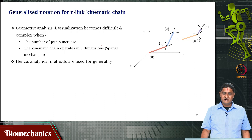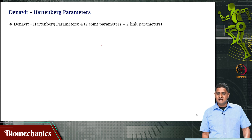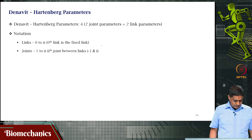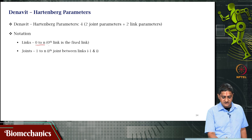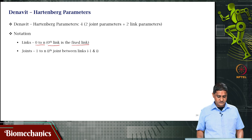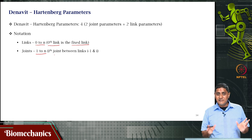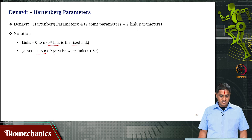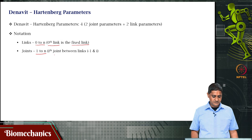The DH convention consists of four parameters in total: two joint parameters and two link parameters. The notation is: links are always from 0 to N, where the 0th link is the fixed link or the ground. Joints are always from 1 to N. The ith joint is between links i−1 and i. Link numbering starts from 0, whereas joint numbering starts from 1, so the first joint is between the 0th link and the first link.